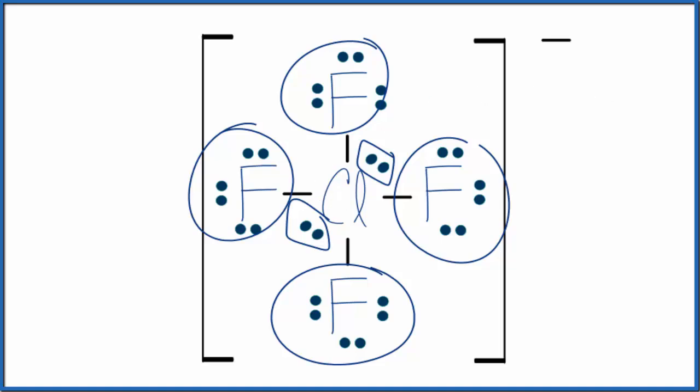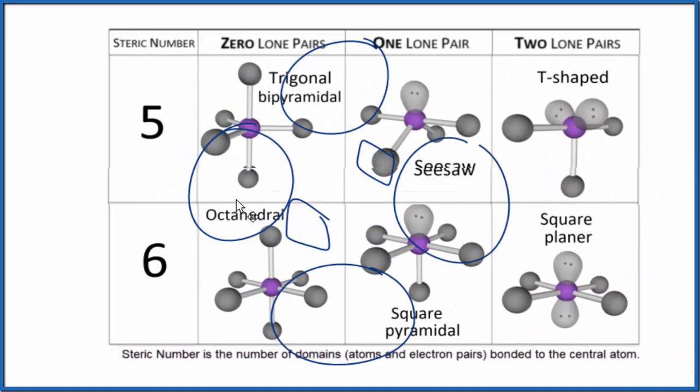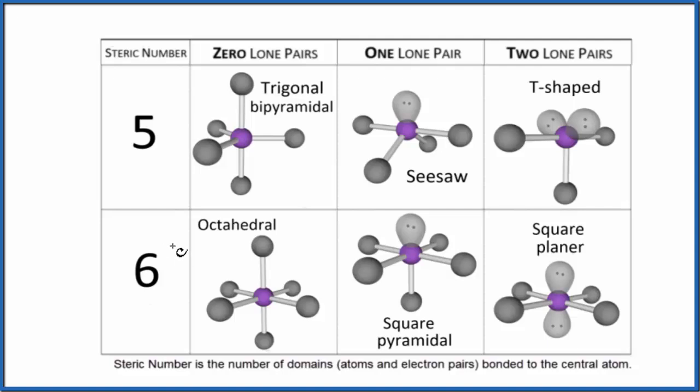So four fluorines and then the two lone pairs. That gives us a steric number of six. We look that up on this table here. Steric number of six with two lone pairs - that's the square planar that we were just talking about. These bond angles here we would expect to be about 90 degrees and then this line through the center, 180 degrees.